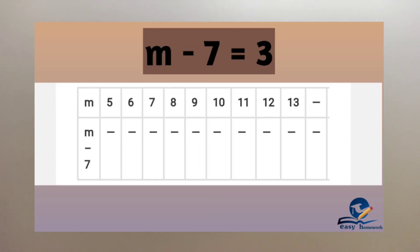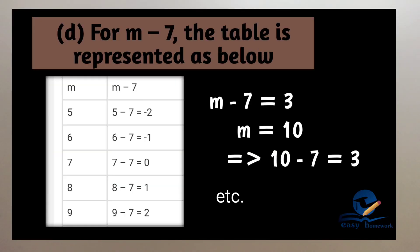Next, we will discuss the fourth question. The fourth question is: Complete the table and find the solution to the equation M minus 7 is equal to 3. M is equal to values. We will solve this equation. Here, M minus 7 is equal to 3. We give values in the place of M. M is equal to 5 as one value. M minus 7 is the expression.